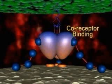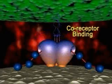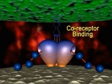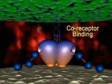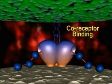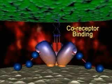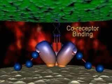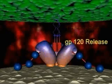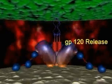Step 2 involves the interaction of the GP120-CD4 complex with the chemokine coreceptor. The action of coreceptor binding is thought to result in further conformational changes in GP120. These changes allow GP120 to move aside, exposing GP41.